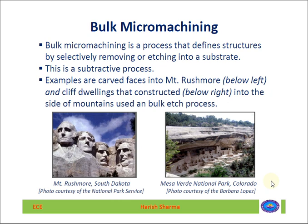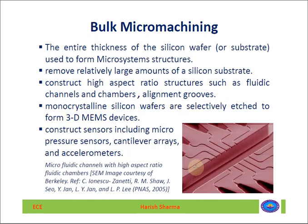Examples of bulk micro machining include carved faces into empty rock, as shown in the left image, and cliff dwellings constructed into the side of a mountain. You can see that in the mountain, an etching process is done — we are removing some material to make these types of faces. Similarly, to make the cliff dwelling structure, material is removed from the side of the mountain.